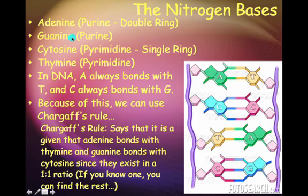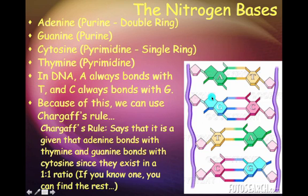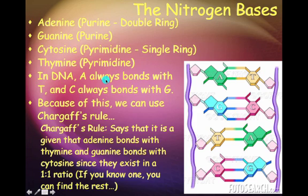The nitrogen bases are made up of four types: adenine, guanine, cytosine, and thymine. Adenine and guanine are called purines because they're double-ring structures. Thymine and cytosine are called pyrimidines — single-ring structures. A always bonds with T, and G always bonds with C. In other words, purines always bond with pyrimidines: a double ring always bonds with a single ring.